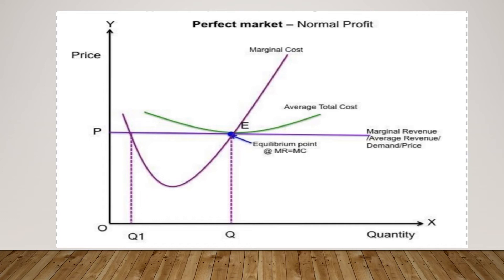In the perfect market, the equilibrium point is where MR equals MC. When average total cost equals average revenue, normal profit occurs.